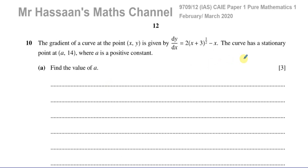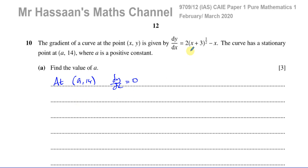A stationary point is a point of zero gradient. It could be a maximum, a minimum, or a point of inflection, but it's a point where the gradient is equal to zero. So we know that at the point (a, 14), dy/dx equals zero. So if I take the gradient function and equate it to zero.